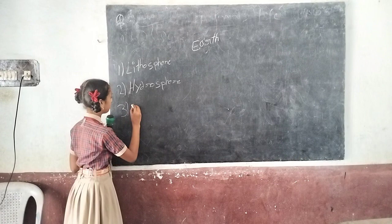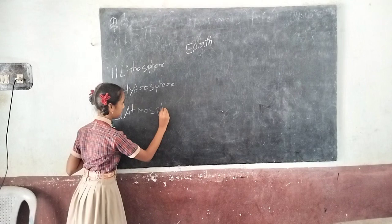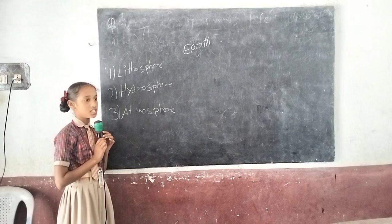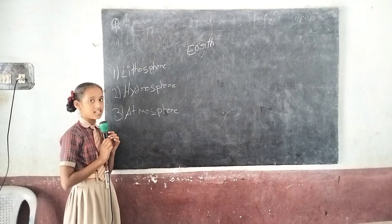Third one, atmosphere. Atmosphere is the layer of air that surrounds the Earth. Different types of gases make up the atmosphere. The major gases are nitrogen, 78%, and oxygen, 21%. The other gases like carbon dioxide, helium, argon, and ozone are present in smaller amounts.